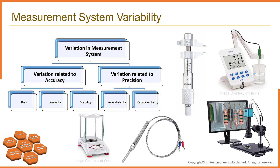Measurement systems are extremely important in continuous process improvement. We need to measure something to know where we are. We use measurements to tell us if there is a problem in the process or if a process change that we implemented has improved the process. For measurements to be effective, they must be timely, accurate, and precise. So the question is: how do we provide measurements that are meaningful? This question will be answered in these video series.